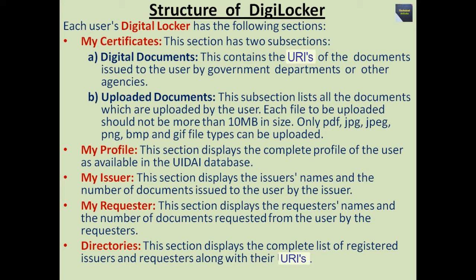The next section is My Profile, which displays the complete profile of the user as available in the UIDAI database. Next is My Issuer — this section displays the issuers' names and the number of documents issued to the user by each issuer. Next is My Requester — this section displays the requesters' names and the number of documents requested from the user by the requesters. The last section is Directories, which displays the complete list of registered issuers and requesters along with their URIs.